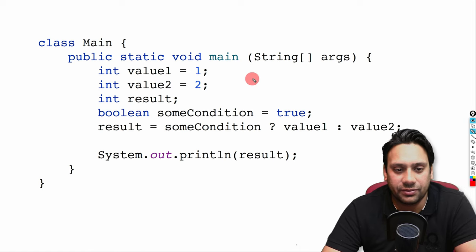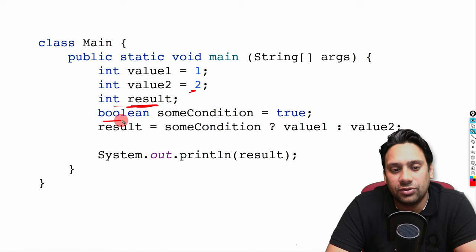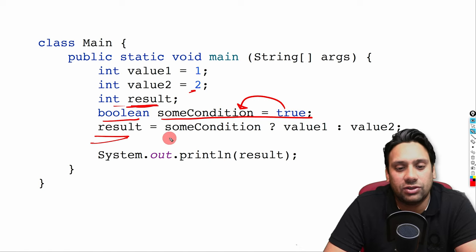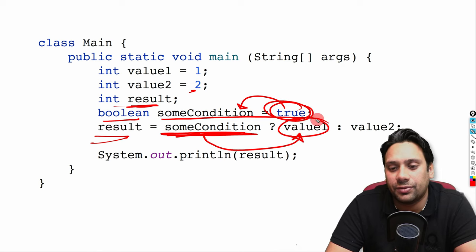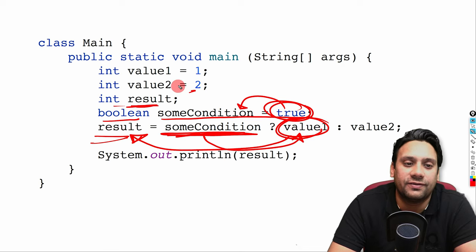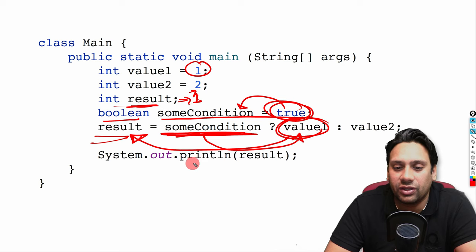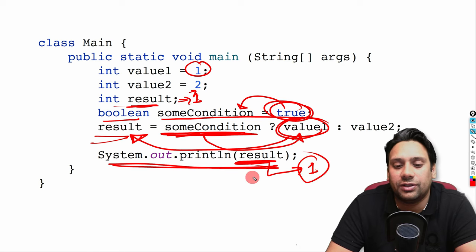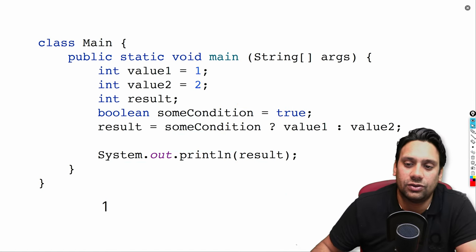Now let's see the next statement. Integer value1 equals 1, value2 equals 2, integer result. Boolean someCondition is true. Result equals someCondition: since someCondition is true, we print this statement and result gets value1 which is 1. We print result again and this value is 1. So the output is 1.